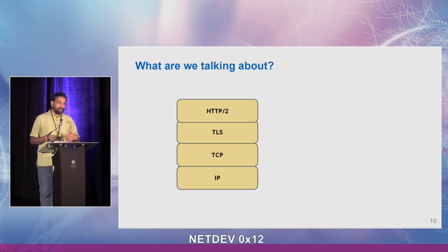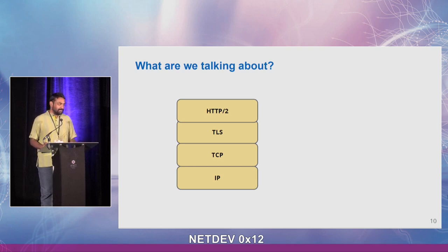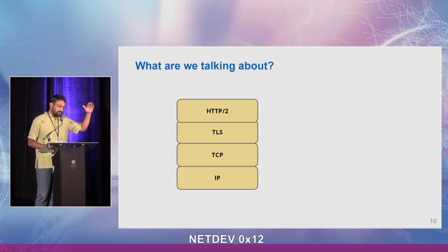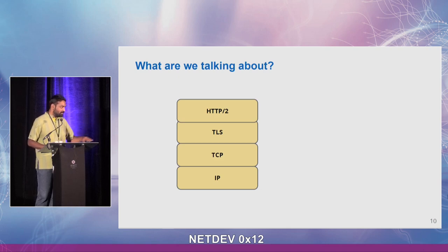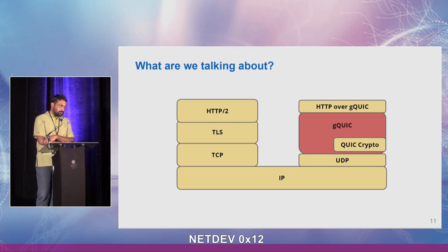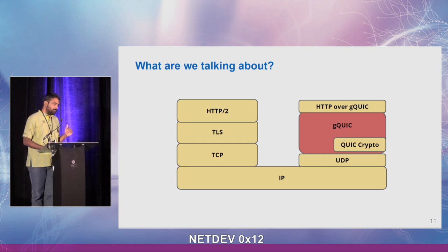So what is QUIC? Your standard HTTPS serving stack has HTTP/2 running on top of TLS, running on top of TCP, which runs on top of IP. QUIC eats up a whole bunch of that. QUIC effectively gives the same service as HTTP/2 but subsumes a big chunk of HTTP/2, TLS, and TCP — and runs over UDP. What I'm calling GQUIC is Google's implementation and deployment of QUIC. I'm calling it GQUIC because we now have QUIC at the IETF, which is really what we're calling QUIC.